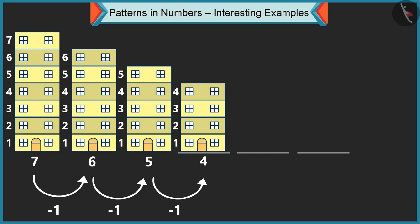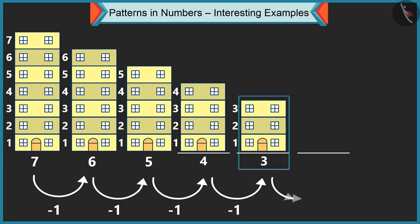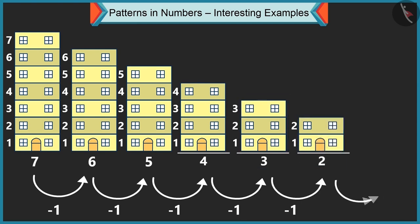Children, we proceed with this pattern by reducing the number of floors by one at a time. Hence, next step we get three, then reducing one from three, we get two, and after two comes a single-story building. And with this, the pattern comes to an end. Thank you, sir.